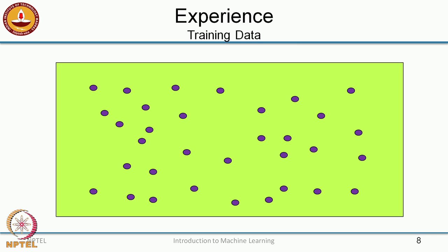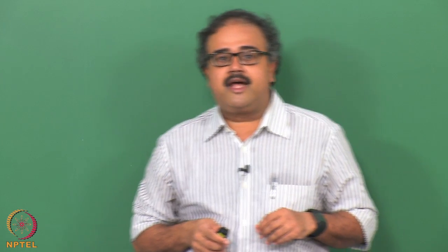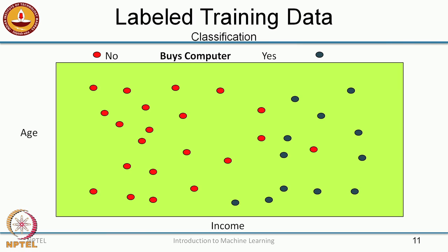In this module we will look at supervised learning. In supervised learning we have experience, where you have some kind of a description of the data. In this case, let us assume that I have a customer database described by two attributes: age and income. For each customer that comes to my shop, I know the age and the income level, and my goal is to predict whether the customer will buy a computer or not. I have this kind of labeled data given to me for building a classifier.